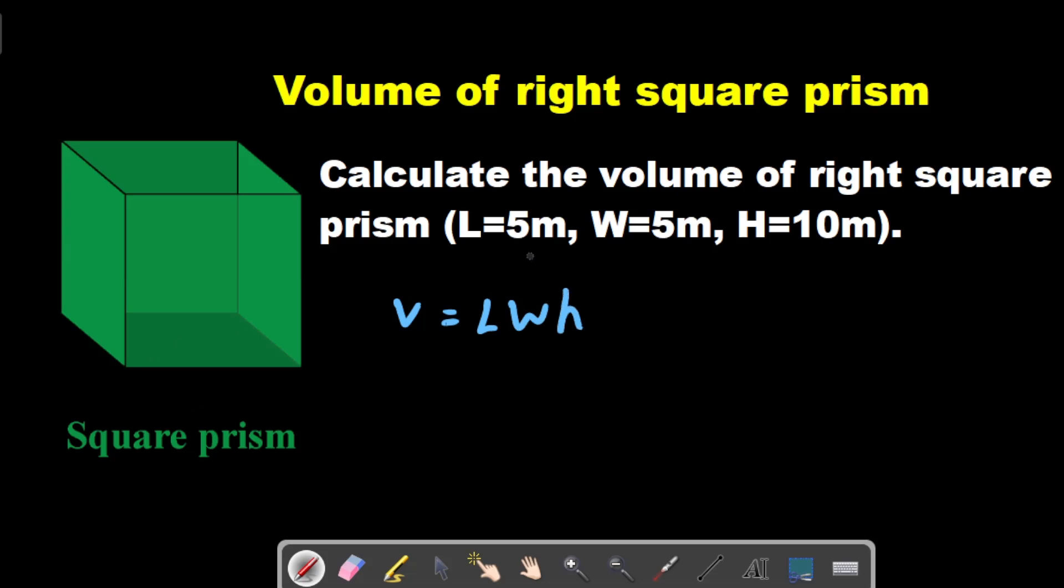So in this case if we see here all the things are present in the equation. So L is 5.